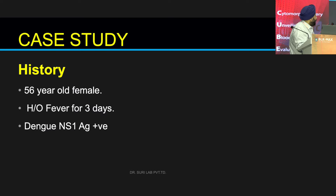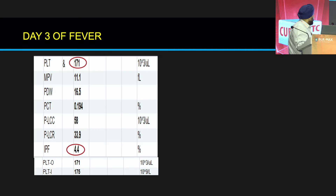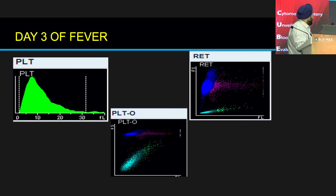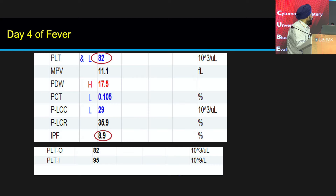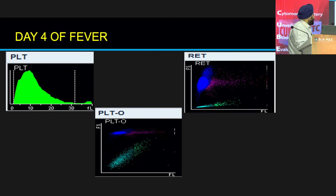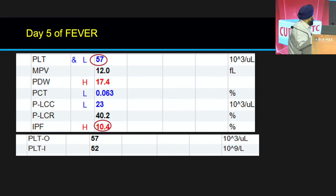Here is a prototype case showing how IPF works in platelet prognosis. This is a 56-year-old lady with fever for 3 days, NS1 positive. On day 3, platelet count is 171,000 and IPF is 4.5% — our normal range is up to 6.6%. The platelet histogram is perfectly normal. On day 4, platelet count reduced to 82,000 and IPF jumped up to 8.9%, with the scattergram showing more IPF density. On day 5, platelet count further reduced to 57,000 and IPF reached 10.4%.